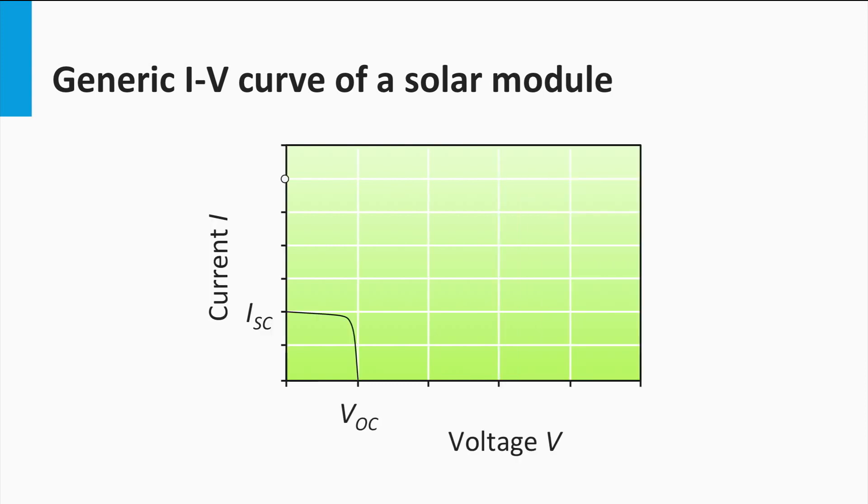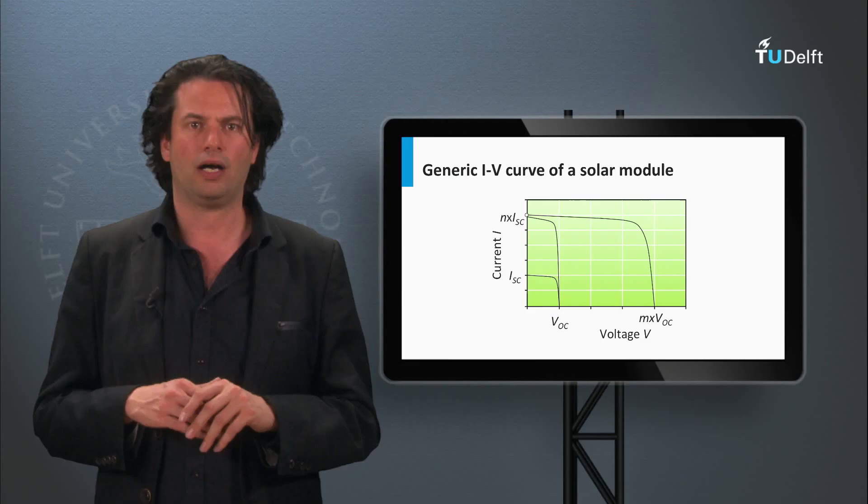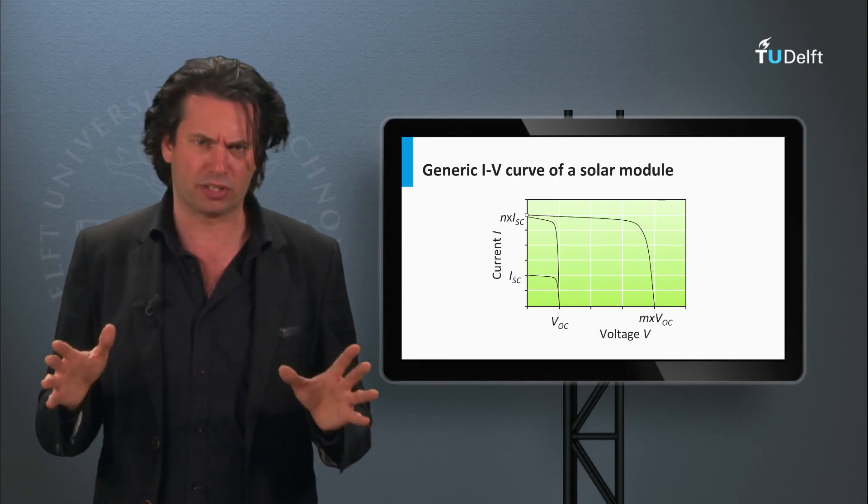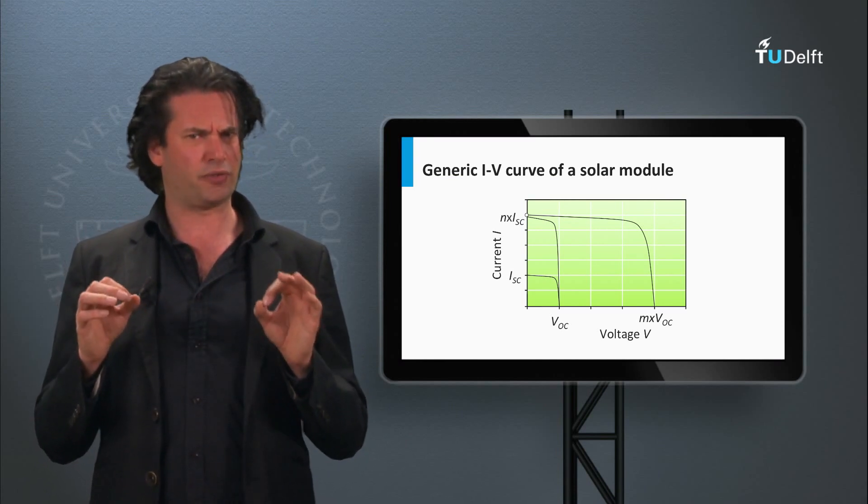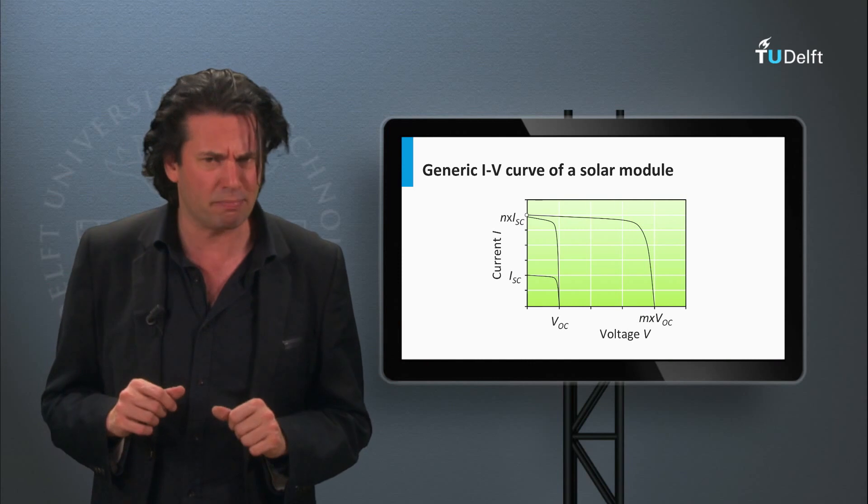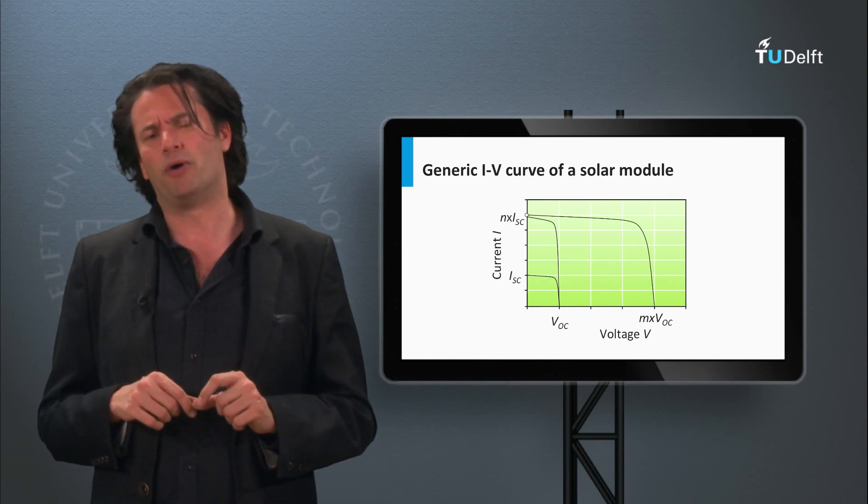You will remember that the voltage and current characteristics for a module with M identical cells in series and N identical cells in parallel will look like this. The current multiplies by a factor of N due to parallel connection and the voltage multiplies by a factor M due to a series connection. But what about the other parameters like efficiency and fill factor for a solar module? Do they increase, decrease or stay the same? Think about this for a moment.